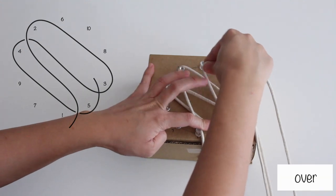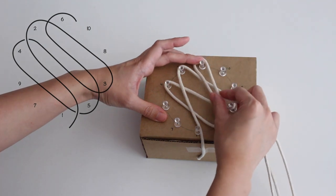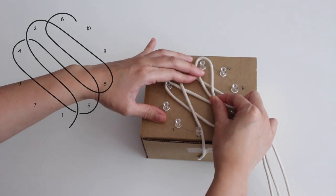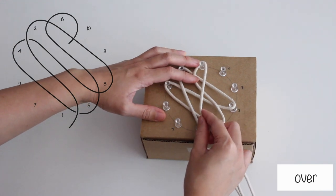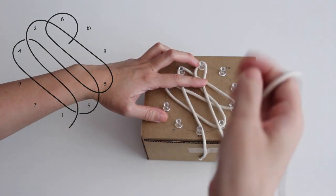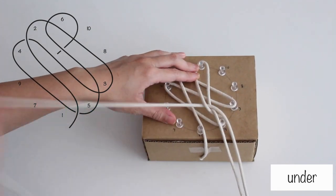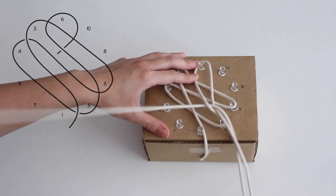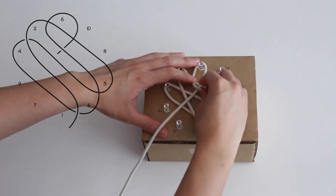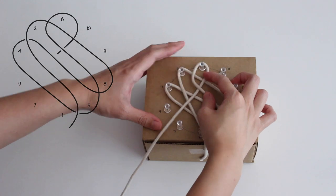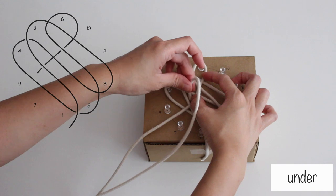Then bring the end over the 2 cords and wrap it around number 6. Next, cross over the cord and under the next cord. Then go over the cord and under the next cord.